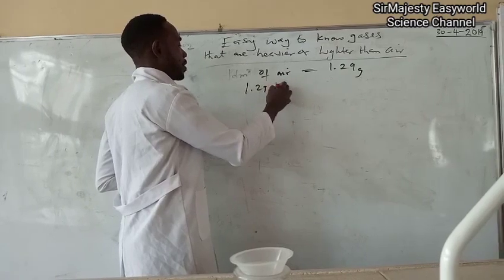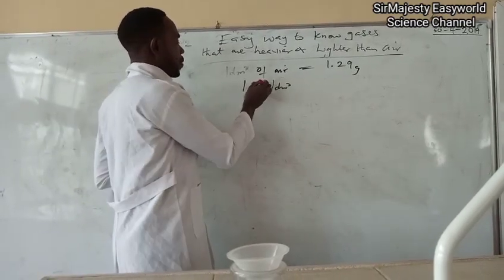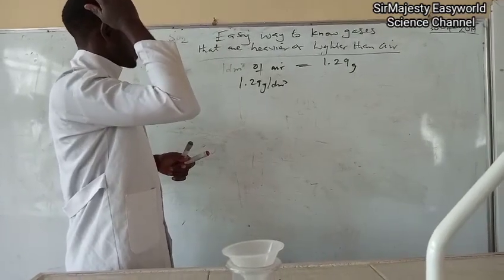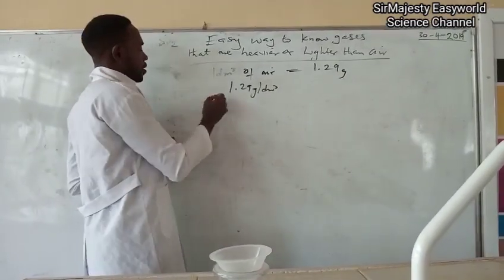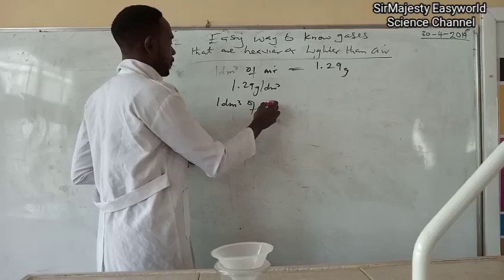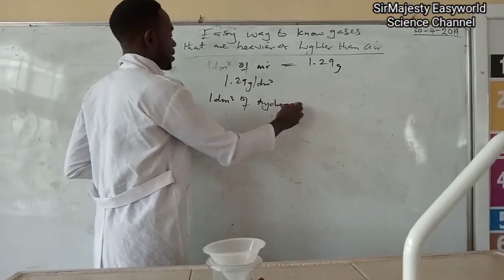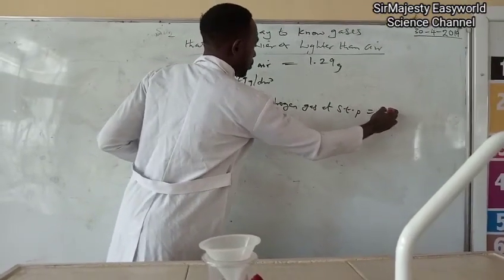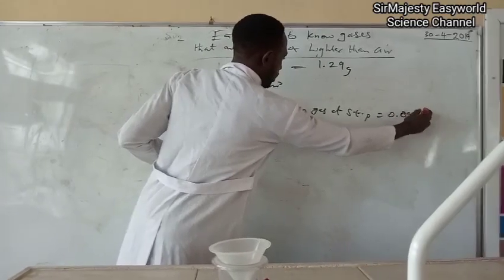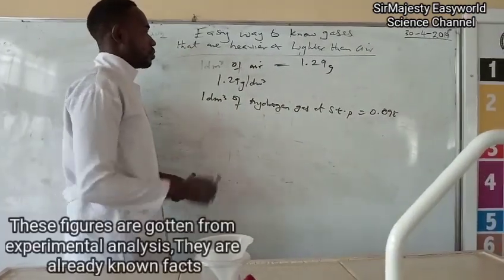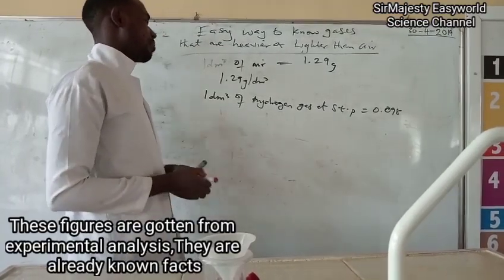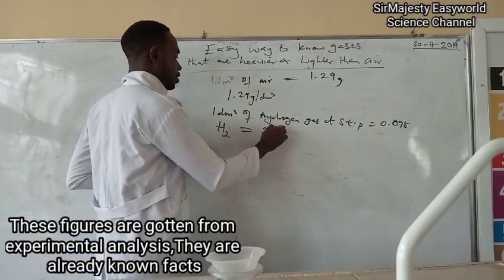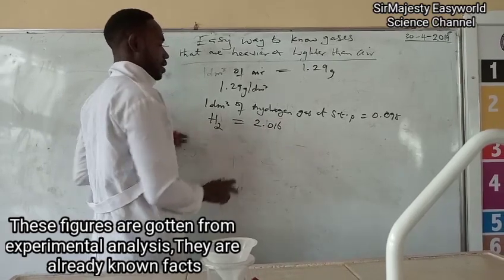Now we take a look at the lightest substance known already. And that lightest substance is hydrogen gas. From experiments, one dm³ of hydrogen gas at STP have a density of 0.09, that's the density for one dm³. Then from analysis, the molar mass of hydrogen gas, because hydrogen is diatomic, is 2.016. That's the molar mass.